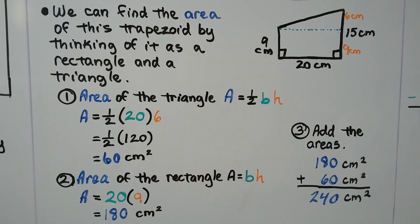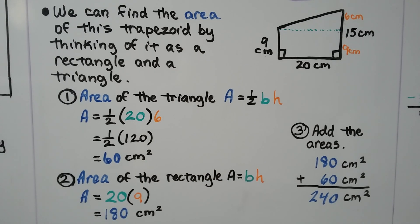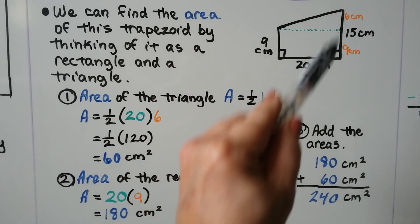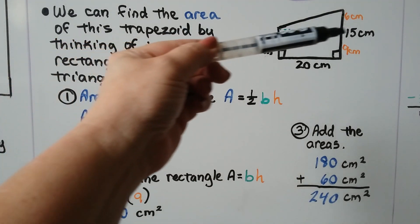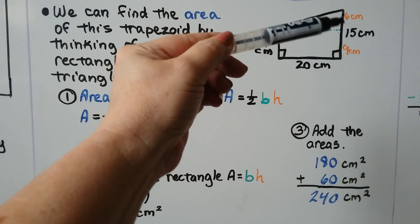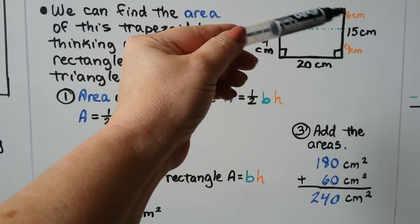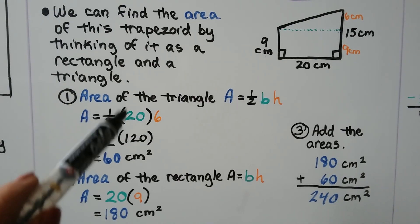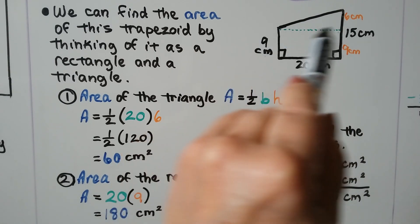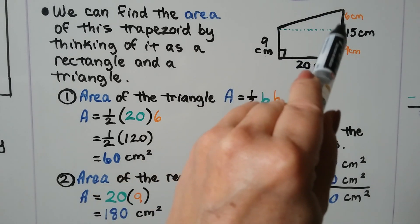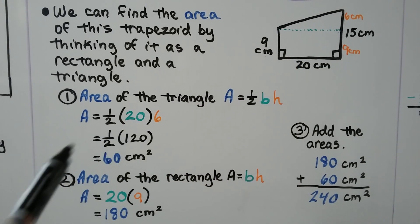Take a look at this diagram. We can find the area of this trapezoid by thinking of it as a rectangle and a triangle. It tells us that this side is 15 centimeters. Well, if we draw a line here, then we know that's 9 centimeters, which means that's 9 centimeters, which means the remaining part of this side must be 6 centimeters. We do the area of the triangle is half times 20. So we're going to use this as our height or base, and we can use this as our height or base either way. And we get half times 120, which is 60 centimeters squared.